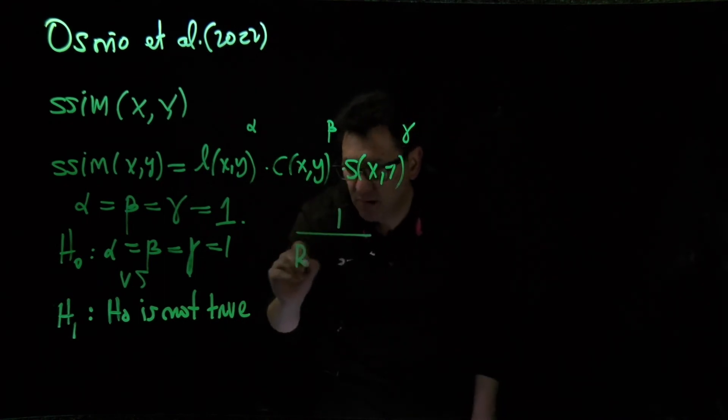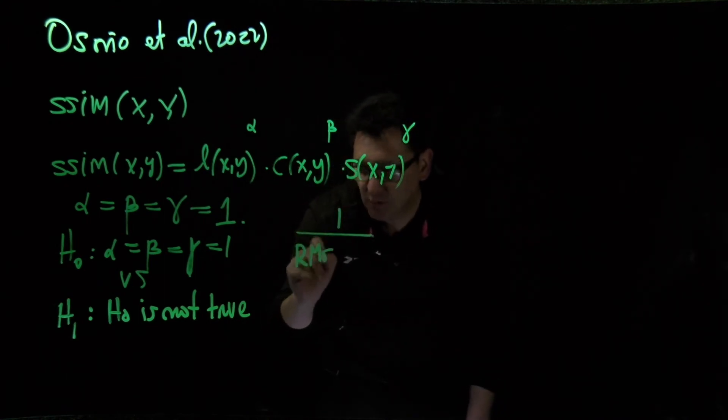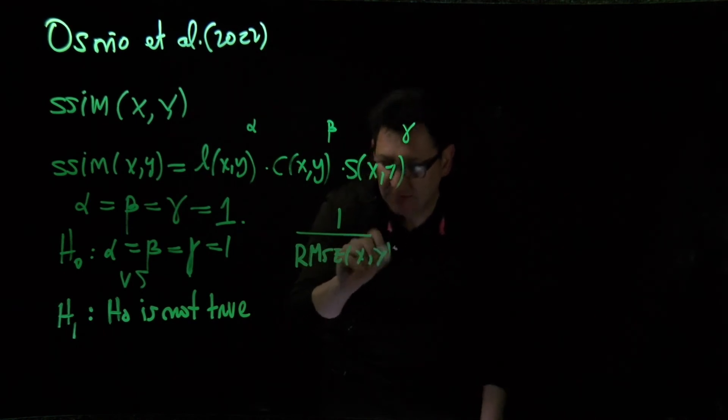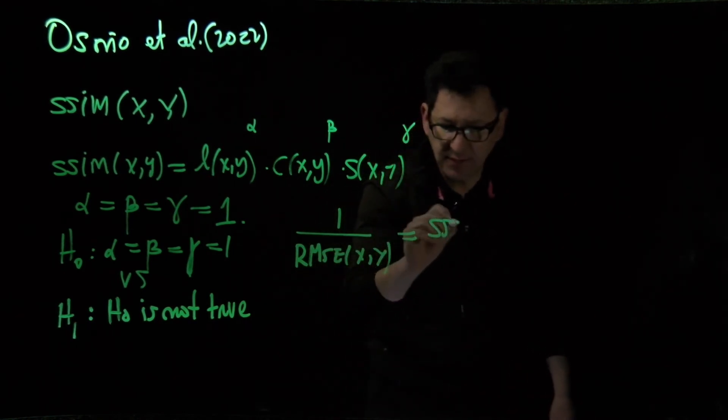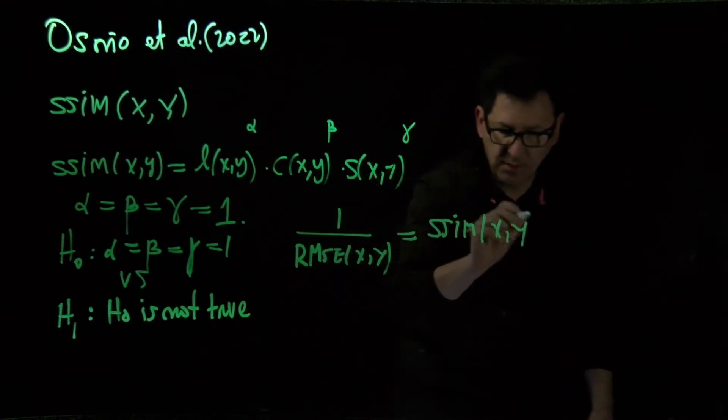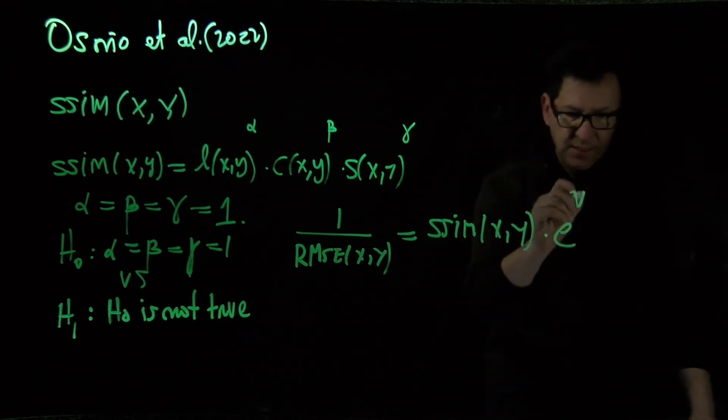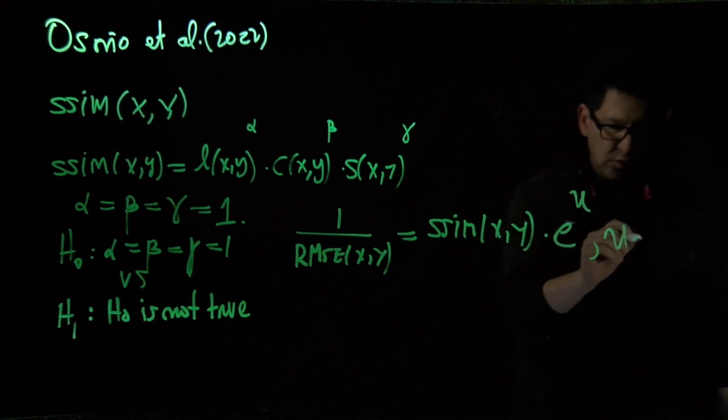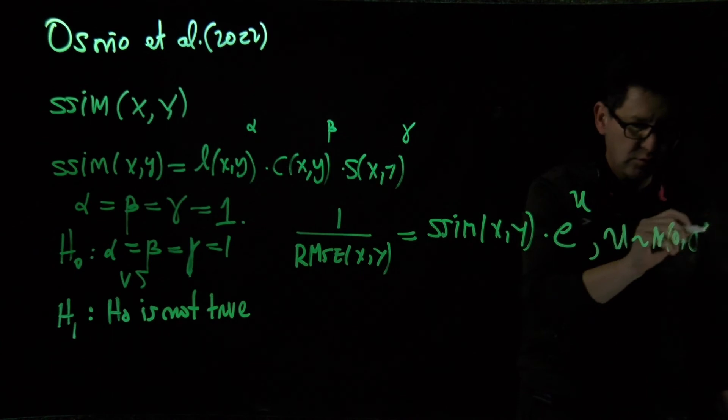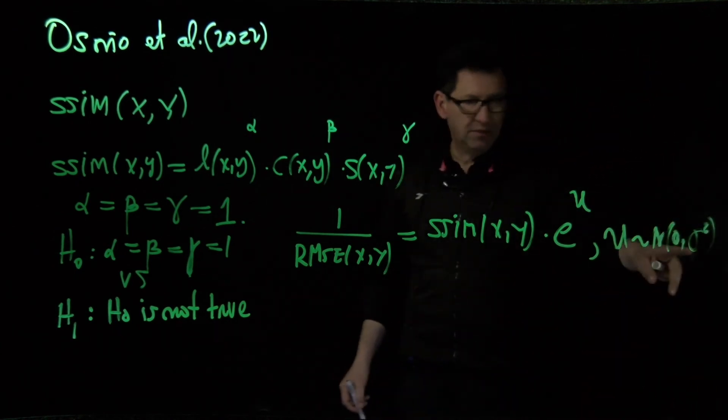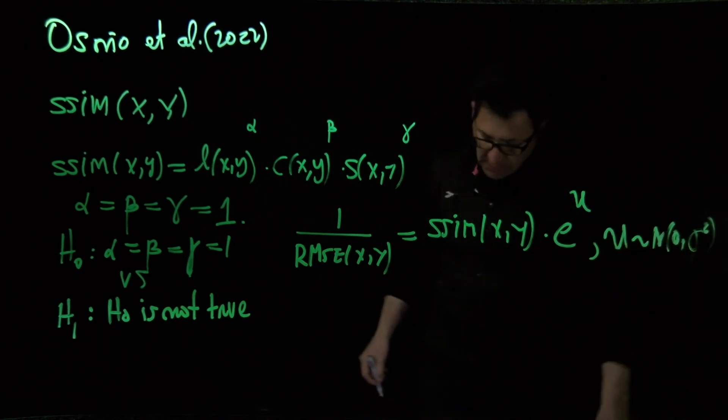The model is defined as one divided by root mean square error between images x and y, which equals SSIM times e to the power u, where u is a white noise sequence with mean zero and variance sigma squared. Pseudo-likelihood is used to approach this problem.